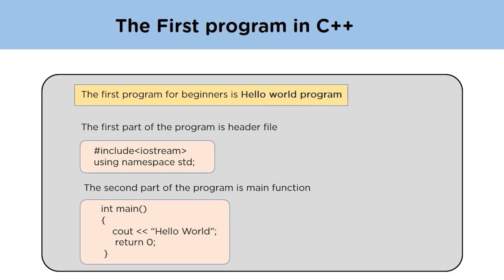Using namespace std means we are using all the things which are within the standard library. The second part of the program is the main function — this is a special function from where the execution of the program starts. Inside the main function we are printing 'Hello World' using cout. Return 0 on the next line indicates that nothing will return and the program executed successfully.